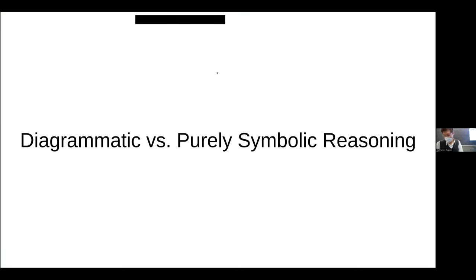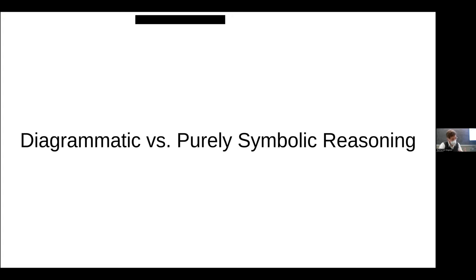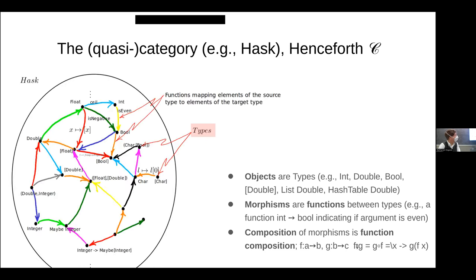The first topic I want to cover is one covered in a previous chapter — chapter 17 or possibly chapter 16 — but it is germane to chapter 18 and probably most chapters after this. This is the issue of diagrammatic versus purely symbolic reasoning. Eugenia Chang makes a comment in a bit of text that I found incredibly insightful about why in category theory we reason symbolically with diagrams.